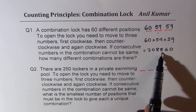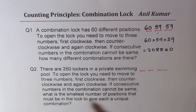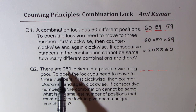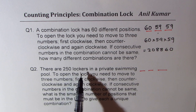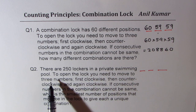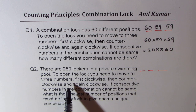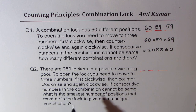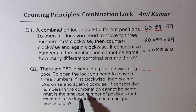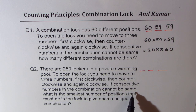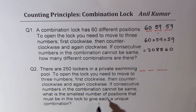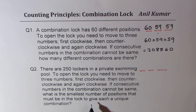We know that the answer should be 250. There are 250 lockers in a private swimming pool. To open the lock you need to move to three numbers — first clockwise, then counterclockwise, and again clockwise. If consecutive numbers in the combination cannot be the same, what is the smallest number of positions?